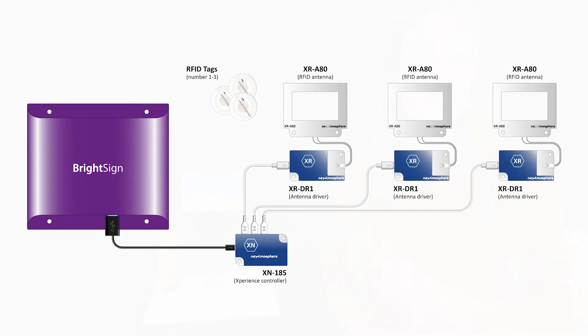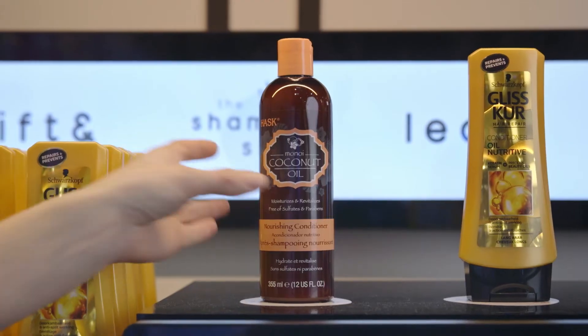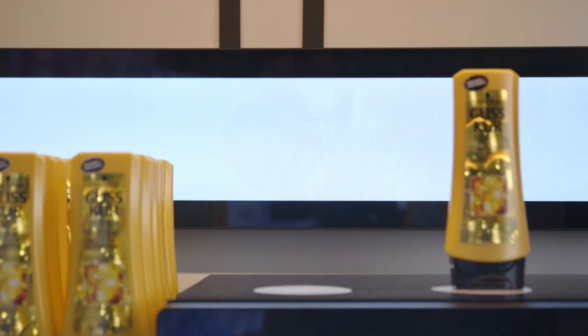However, in case of lift and learn installations built for larger products, multiple sensors are installed side by side, providing a detection area for each individual product on display.